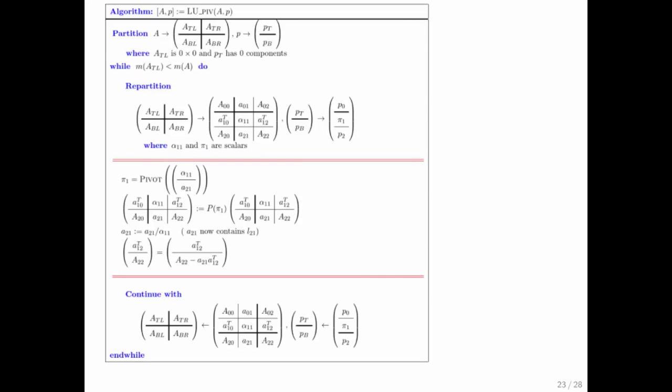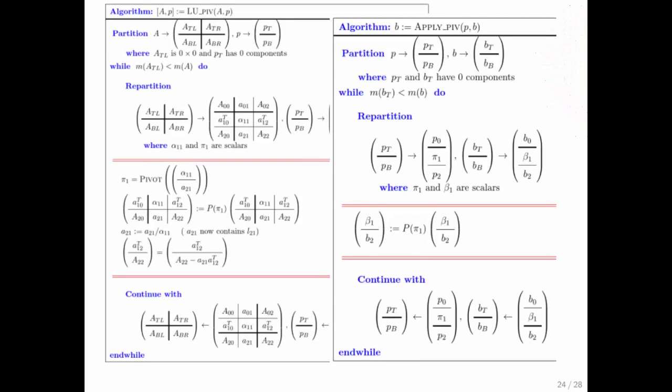Well, let's put things side by side. On the left here what we have is the algorithm that performs LU factorization with partial pivoting. Had the right hand side vector been available, then you would have also applied the same permutations to that right hand side vector.